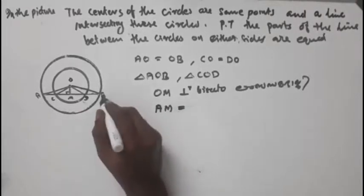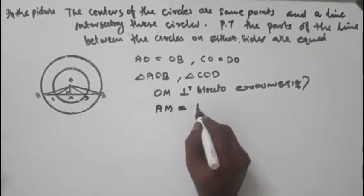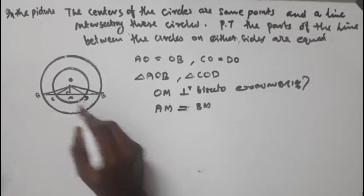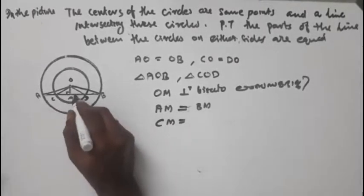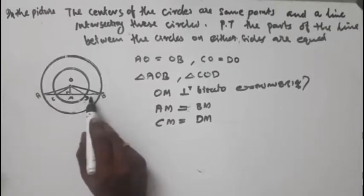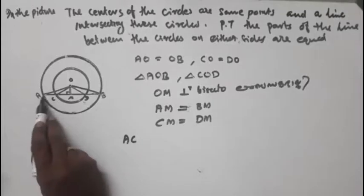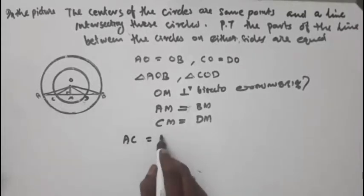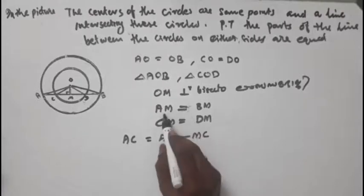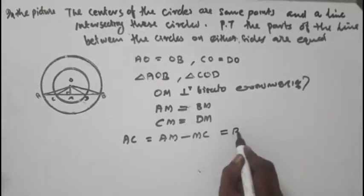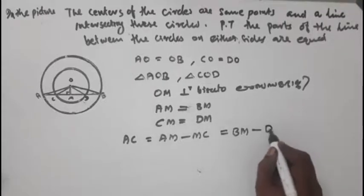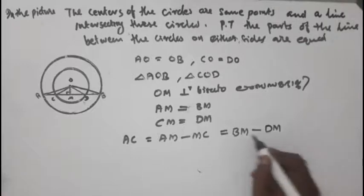The distance AM equals BM, and the distance BM equals CN. AM equals BM, CM equals DM. From the midpoint, the equal distances show that AM equals BM, and CN equals DM, so we can conclude that AB equals CD.